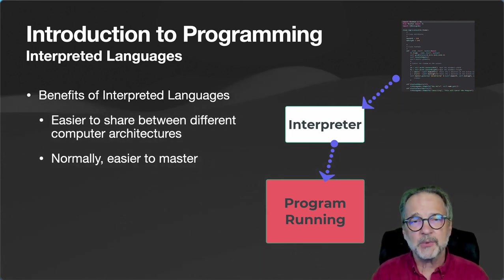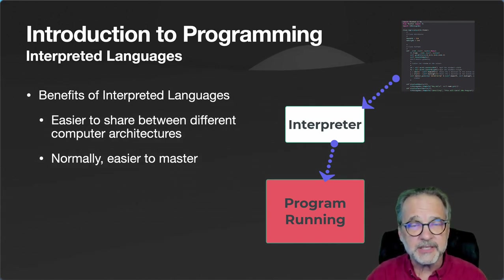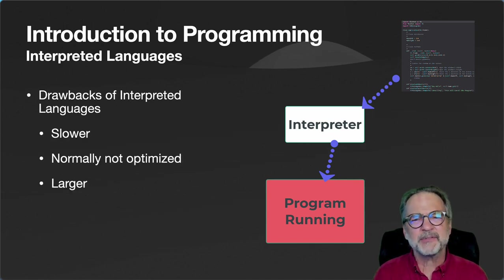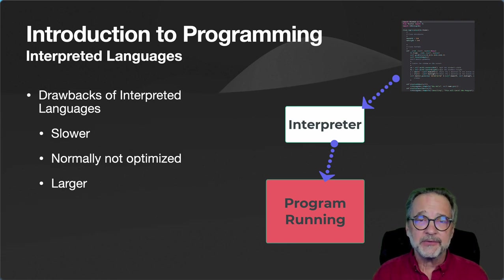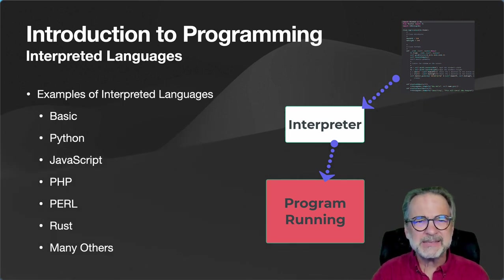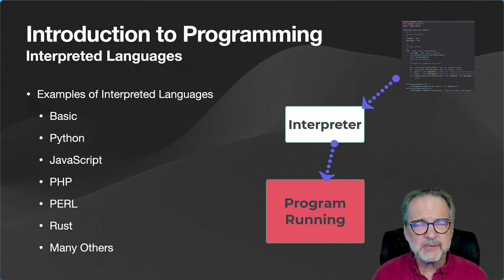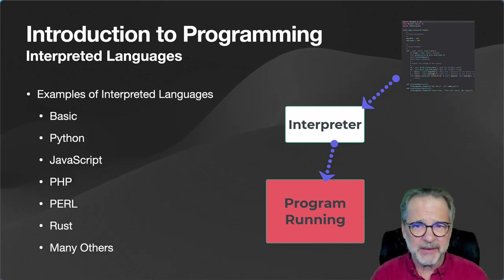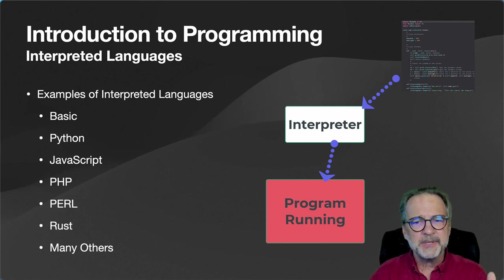BASIC used to be an interpreted language and was one of the most popular back in the 80s, 90s, and early 2000s. Python right now is the most popular because it's easy to learn — we use it in elementary school to teach computing and coding. Some drawbacks of interpreted languages: they are slower, normally not optimized, and the source files are much larger. Examples include BASIC, Visual Basic, Python, JavaScript, PHP — which is used to create dynamically produced web pages — and Perl and Rust.